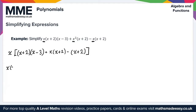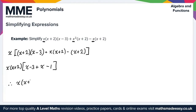Inside the square bracket we get x minus 3, plus x, minus 1. Simplifying: x plus x gives us 2x, and minus 3 minus 1 gives us minus 4. So in total, what we get to simplify the original expression is x times (x plus 2) times (2x minus 4). That gives us our solution for simplifying expressions.